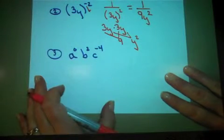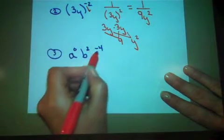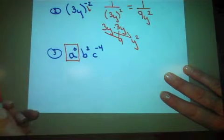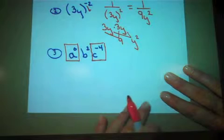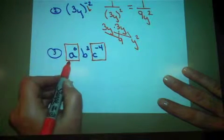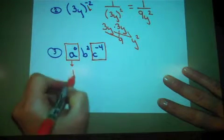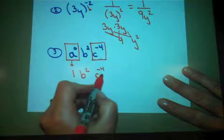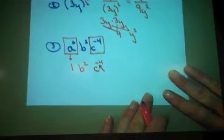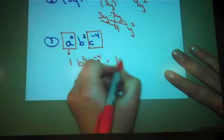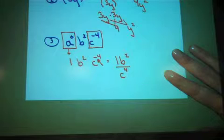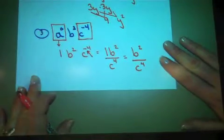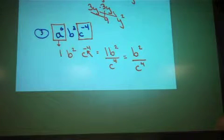Let's look at this third example. I have a to the 0, b squared, and c to the negative 4th. I have two things that I need to fix. The a to the 0 follows the zero exponent rule, and the c to the negative 4th is affected by the negative exponent rule. Anything raised to the 0 power becomes 1. The b squared remains the same, and the negative exponent moves c to the 4th into the denominator. So this becomes b squared over c to the 4th power. Most teachers will ask you not to write the 1 as a coefficient.